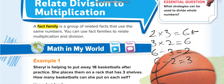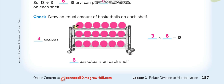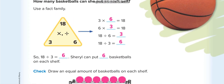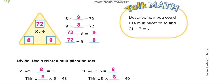Let's solve some examples. Shirley is helping to put away 18 basketballs after practice. She places them on a rack that has three shelves. How many basketballs on each shelf? 18 divided by 3 equals 6. So the three numbers are 3, 6, and 18. The fact family is: 3 times 6 equals 18, 6 times 3 equals 18, 18 divided by 6 equals 3, and 18 divided by 3 equals 6.